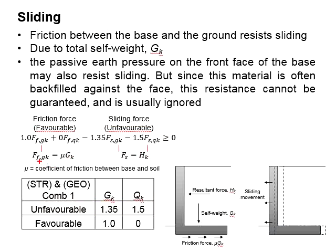The frictional force due to Gk can be quantified as the coefficient of friction multiplied by the self-weight of the system. The sliding force is the horizontal force. It is essential to ensure this equation is greater than zero to prevent the structure from undergoing sliding.